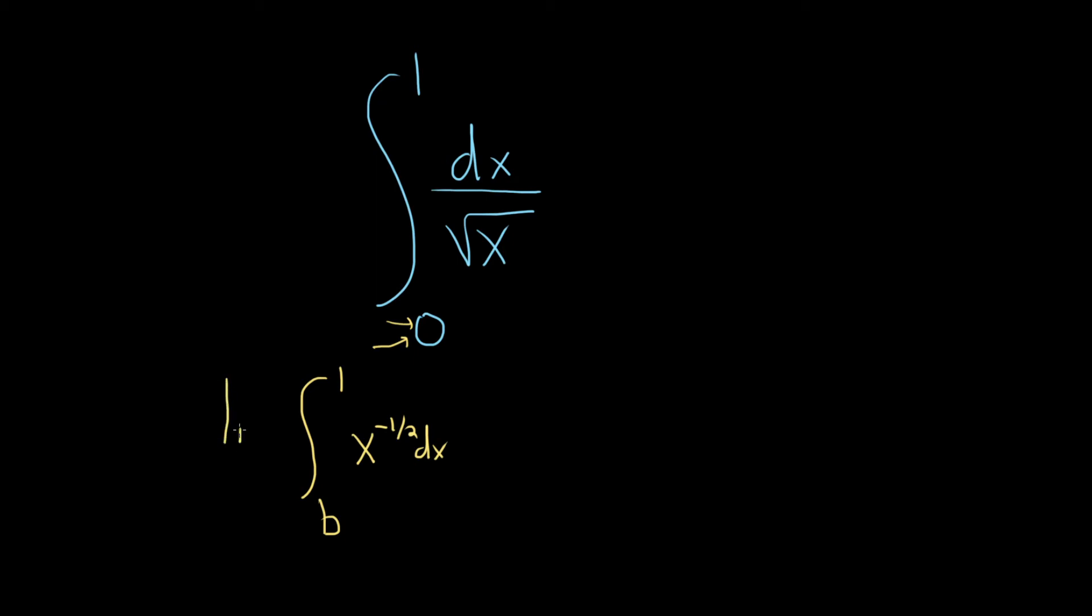And then you take the limit as b approaches the limit that you replaced. So we're approaching zero. Okay, so here's the interval we're working on. Zero, one. And b is here. So we're approaching it from the right. You see from the little picture you can see b is approaching from the right. Very important to figure this part out.